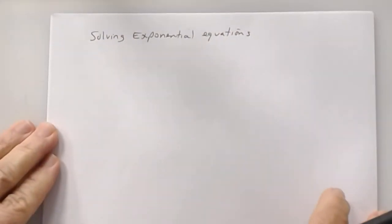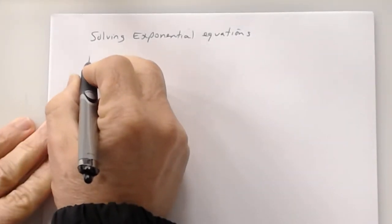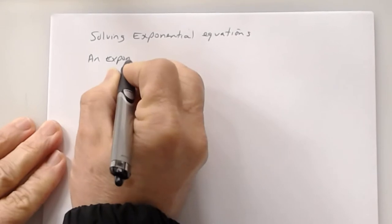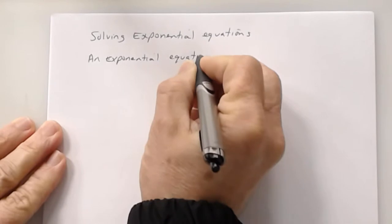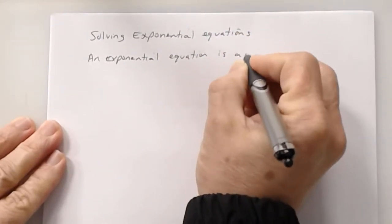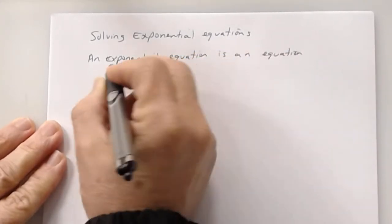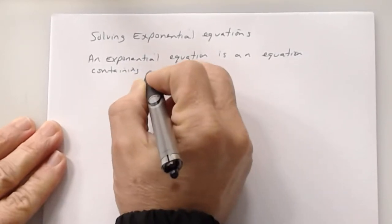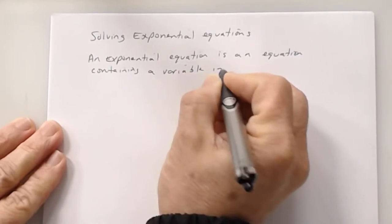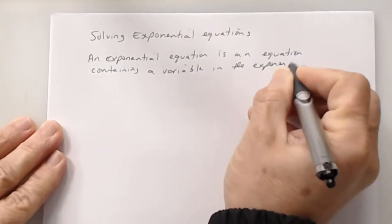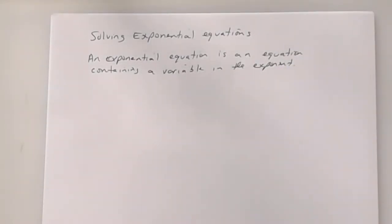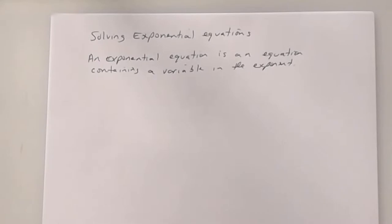So let's talk about what an exponential equation is. An exponential equation is an equation containing a variable in the exponent — hence exponential equation. So an exponential equation is where the variable is located in the exponent. Everything you've done so far, the exponents were numbers, none of them were variables. So an exponential equation is where the variable is located in the exponent.